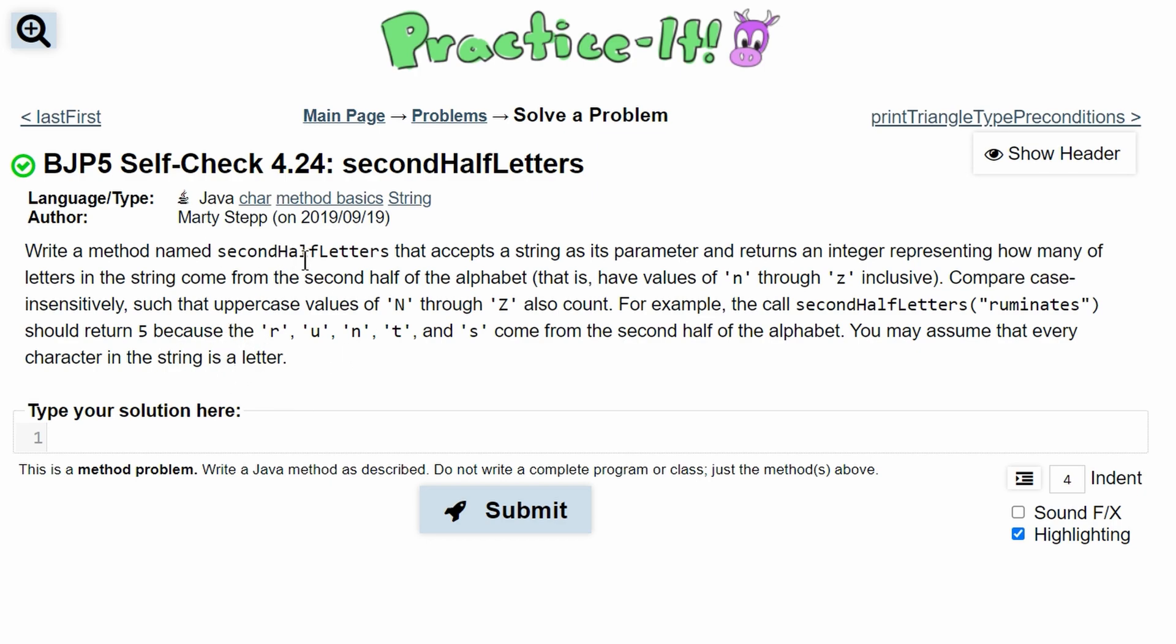For Practice-It self-check 4.24 secondHalfLetters, we are asked to write a method named secondHalfLetters that accepts a string as a parameter and returns an integer representing how many letters in the string come from the second half of the alphabet. That is, values of n through z.